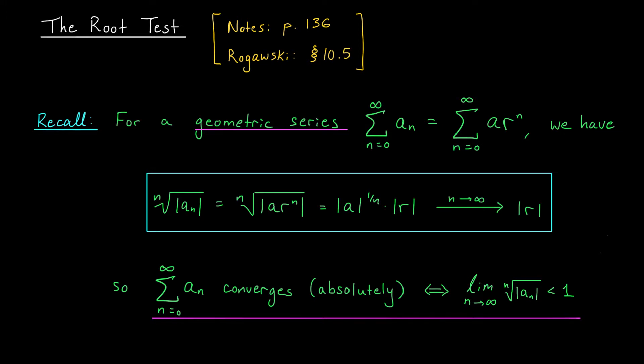Our motivation for the root test comes from geometric series. Recall that a geometric series converges absolutely if |r| < 1, and diverges when |r| ≥ 1. In our last lesson, we thought about |r| as the ratio of consecutive terms, leading to the ratio test. In this lesson, we'll think of |r| in terms of nth roots. Consider the nth root of |aₙ|, the nth term in our geometric series. I can write that as a·rⁿ and split up the root. I get |a|^(1/n) and |r|, since the exponent and root cancel. When n goes to infinity, the exponent goes to 0, making this term go to 1, leaving |r|.